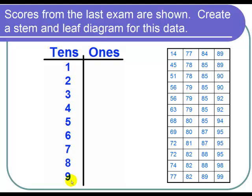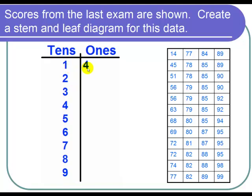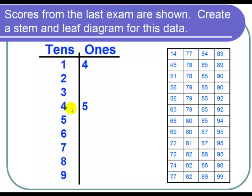Okay now let's work on the ones digits. Let's look at this first number which is 14. It has 1 as its tens digit and 4 as its ones digit. So next to this 1 for tens I place a 4. There's nothing in the 20s and there's nothing in the 30s but we do have the number 45. That has 4 as its tens digit and 5 as its ones digit. So next to the 4 in the tens digit I place a 5 for the ones digit.